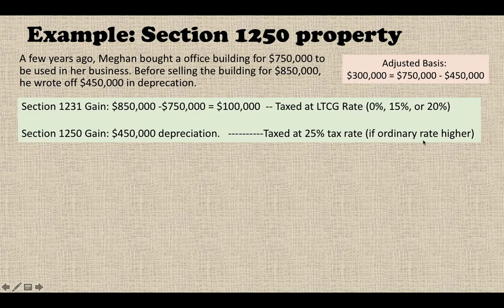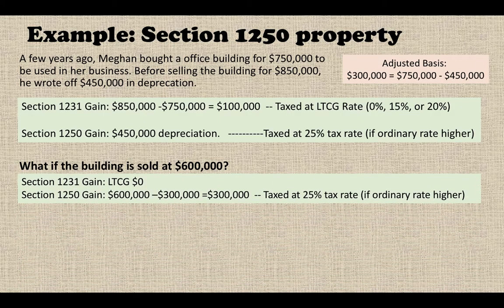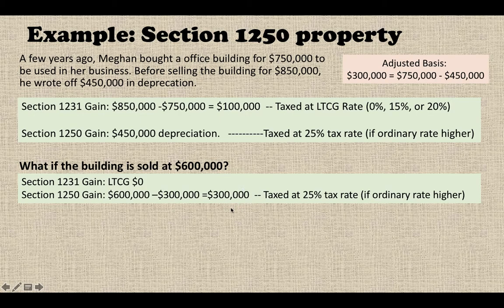What if the building is sold at $600,000? Since she bought at $750,000 and sold at $600,000, she sells at a loss relative to the original purchase price, so there is no Section 1231 gain. However, her adjusted basis is $300,000 and she sells at $600,000, so she does have a Section 1250 gain of $300,000. This is a partial depreciation recapture, taxed at a 25 percent rate.